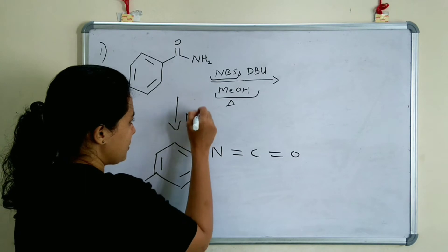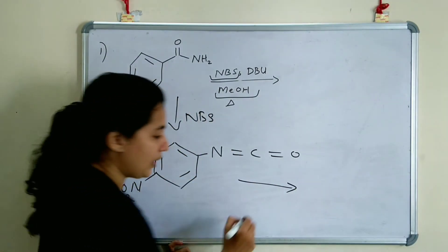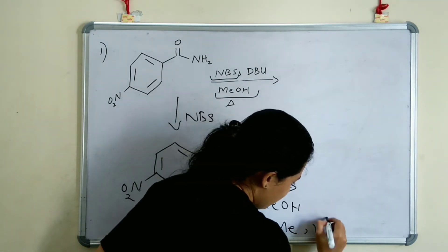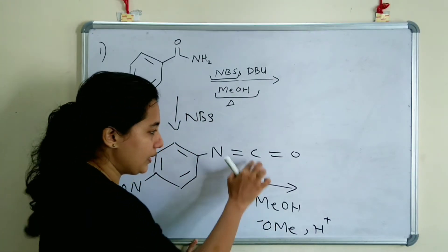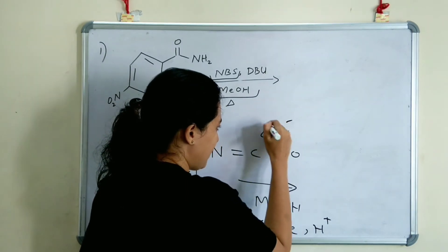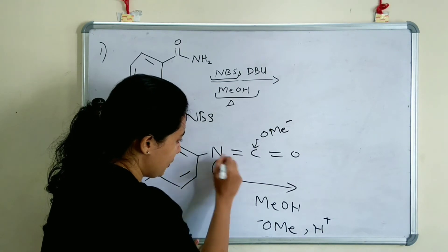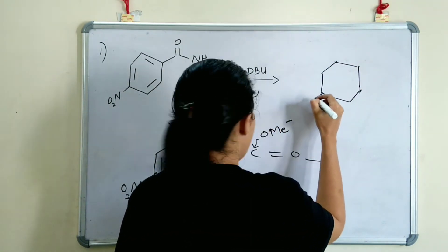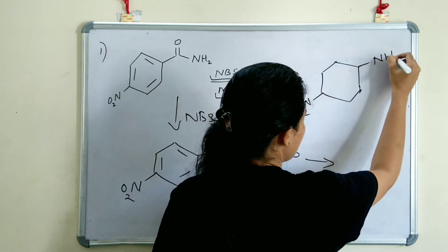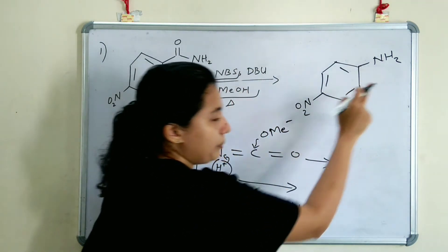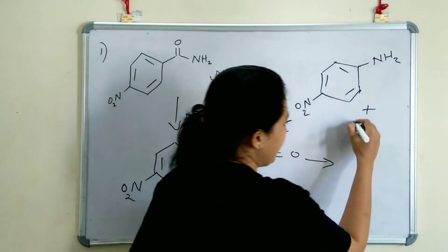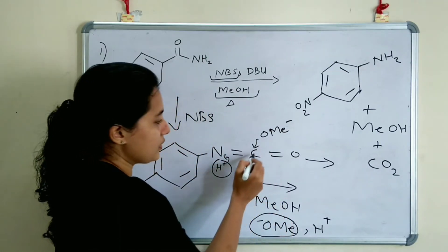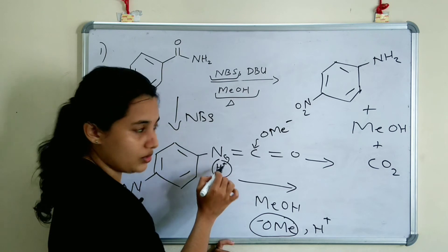After adding NBS, instead of water we add MeOH. MeOH gives OMe⁻ and H⁺. OMe⁻ attaches to the carbon and H⁺ attaches to nitrogen. The product is the primary amine (benzene ring with NO2 and NH2), along with MeOH and CO2.